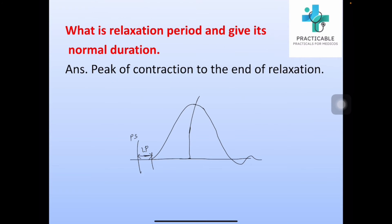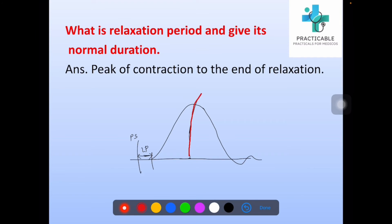What is relaxation period and give its normal duration? It is the period from the peak of contraction to the end of relaxation. This is the relaxation period. Its normal duration is between 30 to 50 milliseconds.